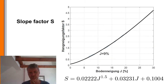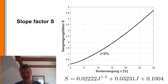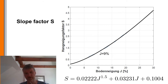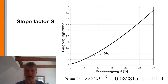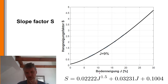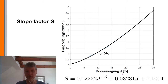The next factor is the slope factor S, which is quite straightforward. The slope factor is set to one when the bottom slope is 9%, which is a reference value. When the slope is larger than 9% the slope factor increases, and when it is lower the slope factor decreases. This factor can be described by a simple formula: you take the slope from geospatial data, put it into the formula, and you get the slope factor.